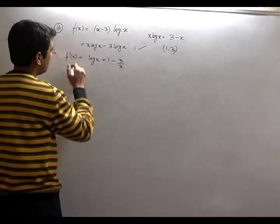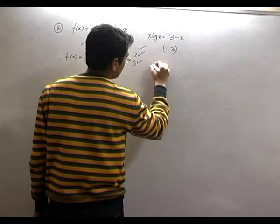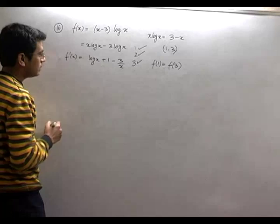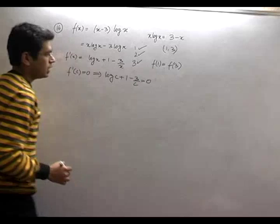We have to see if f(1) and f(3) are equal or not. If I put 1, my value is zero, because log 1 becomes zero, and if I put 3 there, x - 3 becomes zero. So that means my second condition is also true, and the third is also true because f(1) is equal to f(3). So that means Rolle's theorem is applicable. So I can say there is f'(c) = 0, that implies log c + 1 - 3/c = 0.